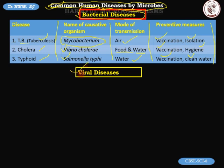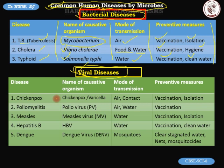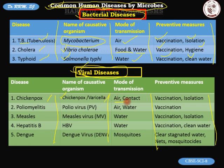The next group is viral diseases. The table lists disease names, virus names, modes of transmission, and preventive measures. First is chickenpox, caused by chickenpox virus, also called varicella. Mode of transmission: air and contact with the patient. Prevention: vaccination and isolation. Second is poliomyelitis (polio), caused by poliovirus (PV). Mode of transmission: air and water. Prevention: vaccination.